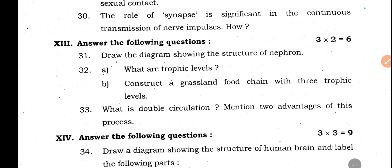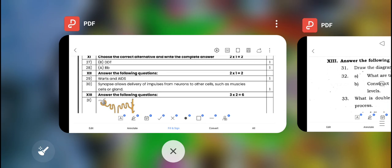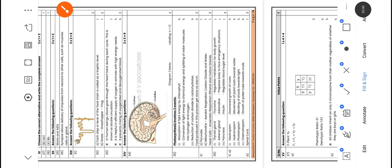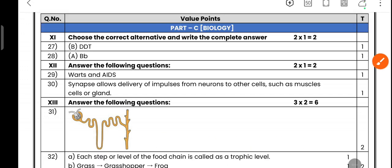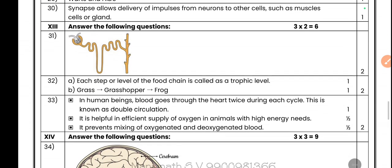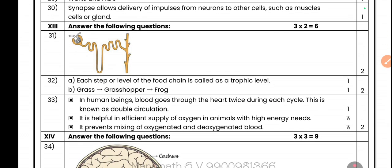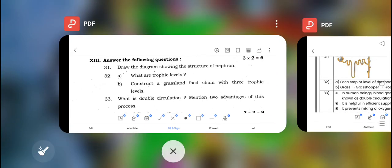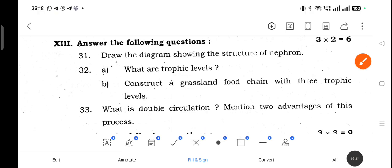Question 30: The role of synapse is significant in the continuous transmission of nerve impulses. The answer: synapse allows delivery of impulses from neurons to other cells such as muscle cells or glands.